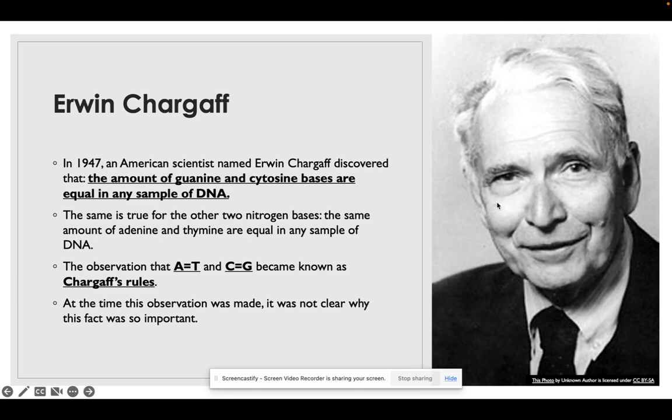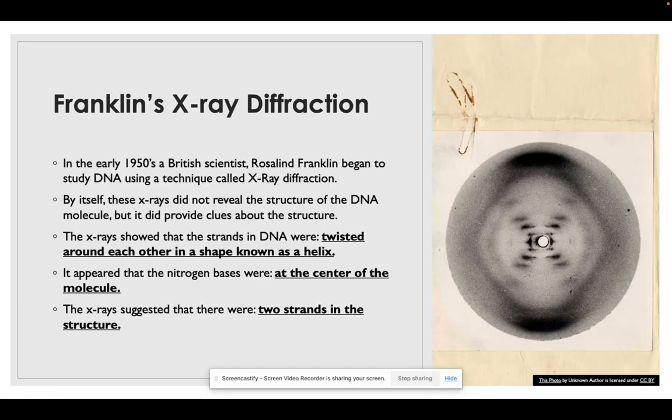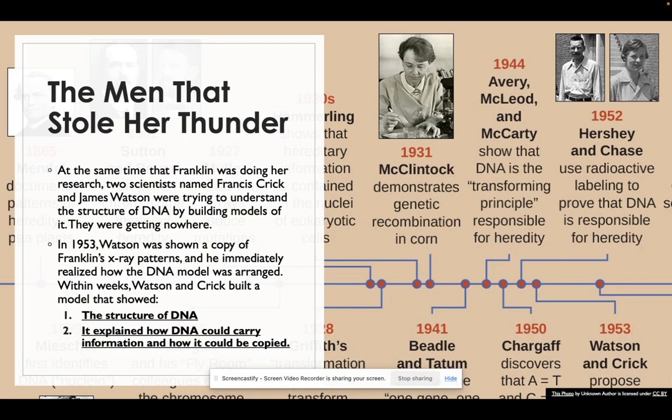There was this woman, a British scientist, her name was Rosalind Franklin. In the early 1950s she began using this technique called x-ray diffraction to study DNA. By itself, the x-rays did not truly reveal the structures of DNA, but it did provide clues. These clues were that the strands of DNA were twisted around each other in this helix form, that the nitrogen bases were at the center of the molecule, and that there were two strands in the structure.